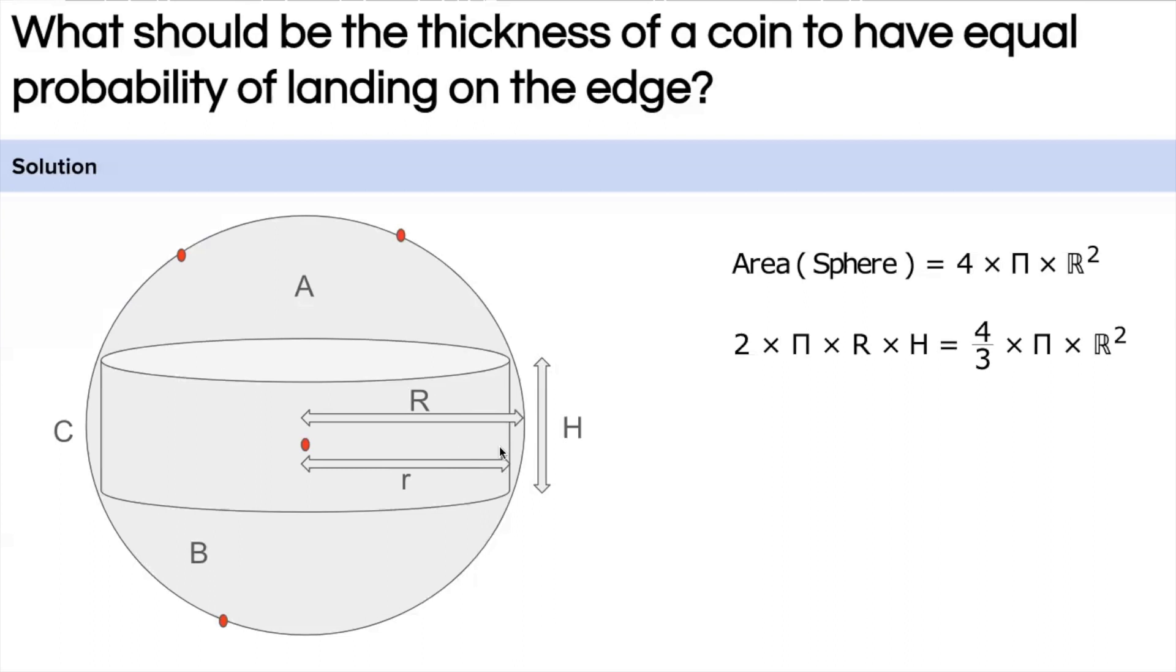Pythagoras theorem, what it will say is R², capital R square, will be equal to the small r² plus (H by 2)², height by 2 whole square.